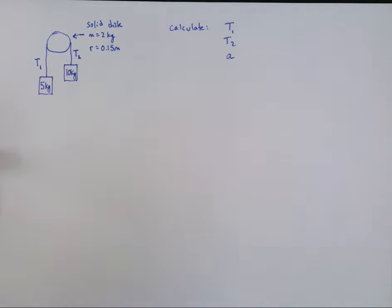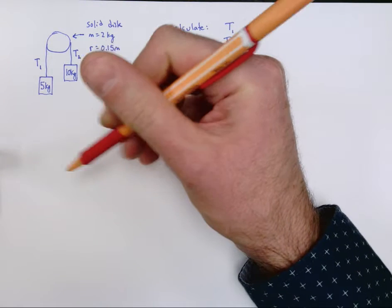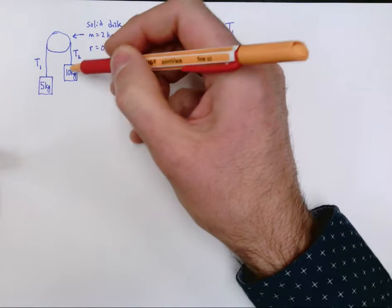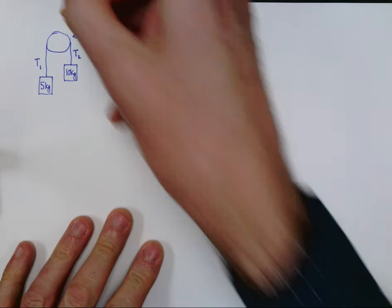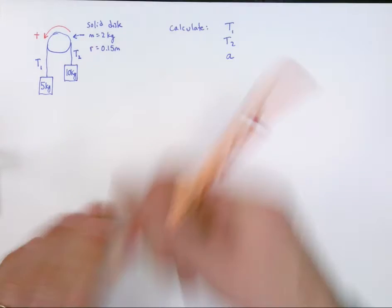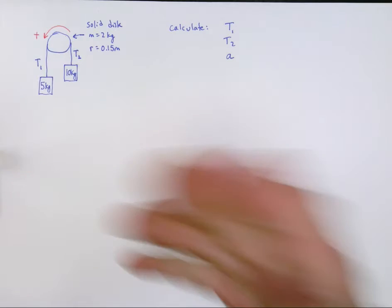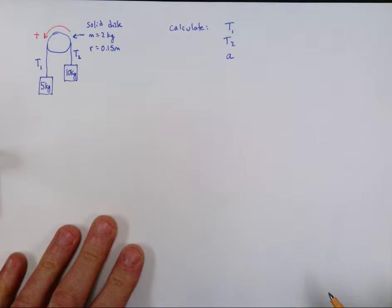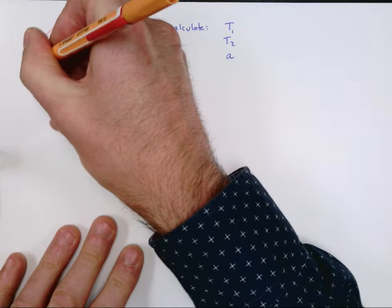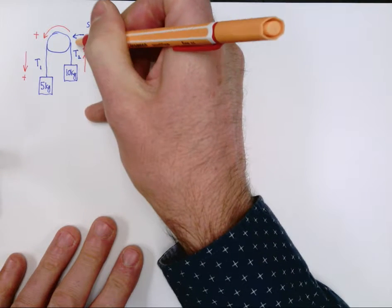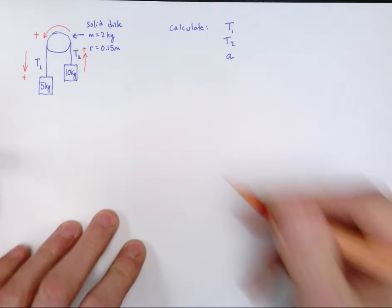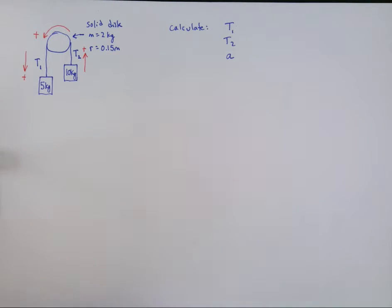One big caution with these problems: you have to be careful about direction. These things are tied together, but the pulley changes the direction of motion. We could arbitrarily choose a positive direction, but I think it's less confusing if we stick to the traditional idea that counterclockwise is positive. Using the right-hand rule, that direction means down is positive on the left-hand side and up is positive on the right-hand side.